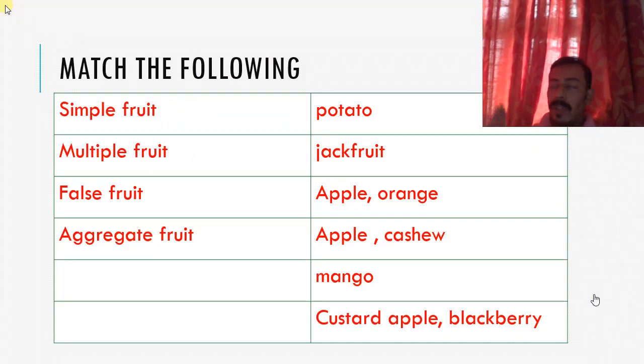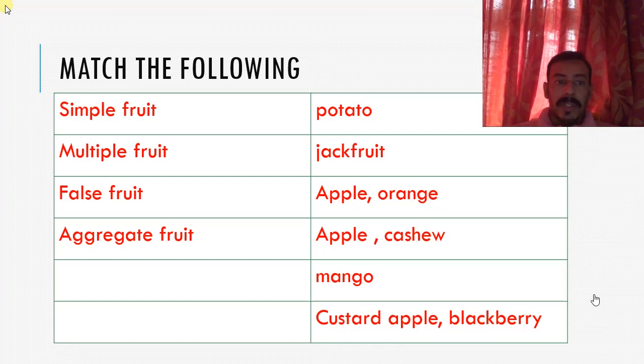So based on this, let's classify the following. So we have simple fruit, multiple fruit, false fruit, and aggregate fruit. Based on this, write down your answer.